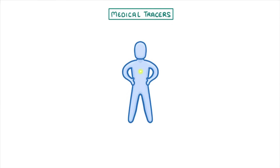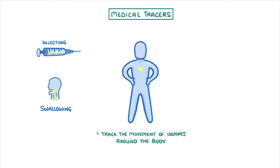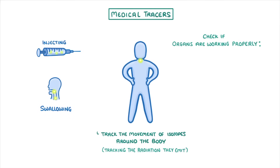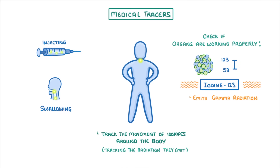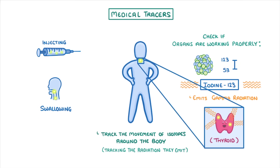The other use of radiation that we need to cover are medical tracers. If we place certain radioactive isotopes inside a person's body, which we can do by injecting them or getting the person to swallow them, then we can actually track the movement of the isotopes around the person's body by tracking the radiation that they emit. This means we can check if particular organs are working properly by seeing if they absorb the right amount of the substance. For example, by giving people iodine-123, which emits gamma radiation, we can see if the iodine is being absorbed by the thyroid gland like it should be, because if it is, then we'll be able to detect the gamma radiation.